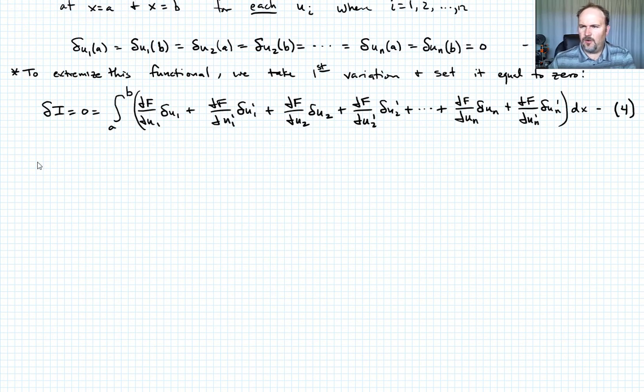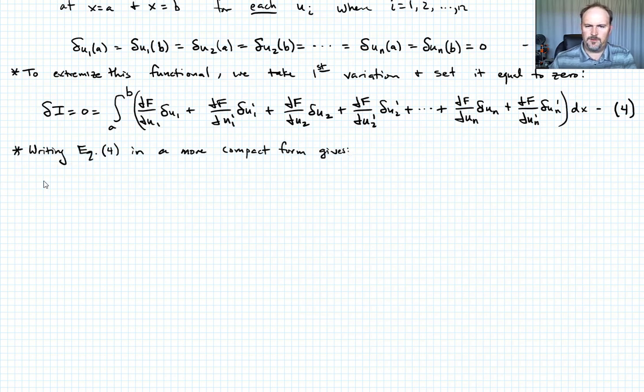So we can write four in a more compact form just using a summation notation. And in that case, we could just write then that the integral from a to b of the sum now from i equals one to n of the quantity partial f with respect to ui times delta ui plus partial f with respect to ui prime, delta ui prime.